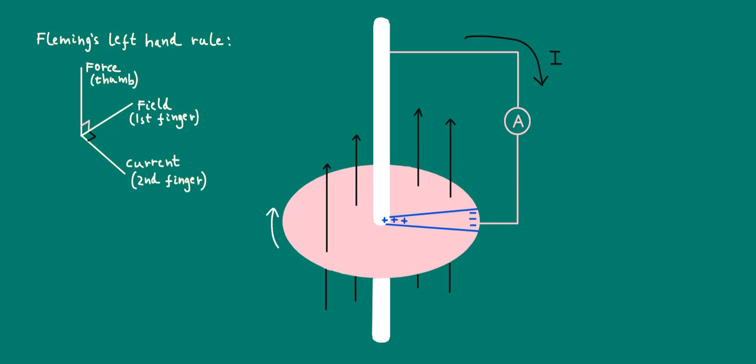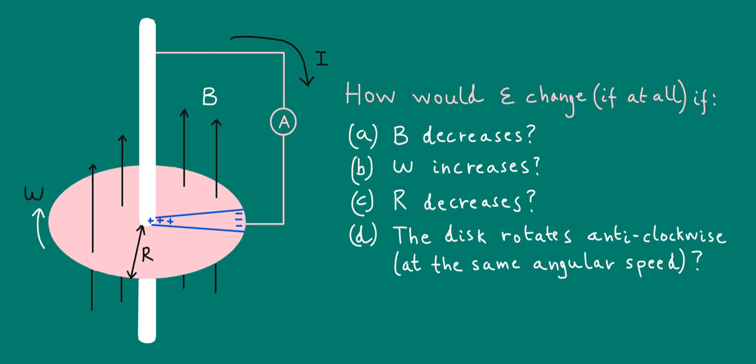Now, here's a couple of questions for you to ponder over. What, if anything, would change to the induced EMF if: (a) the magnetic flux density B were to decrease, (b) the angular speed omega were to increase, (c) the radius of the disk capital R were to decrease, and (d) the disk were to rotate anti-clockwise but at the same angular speed as originally. Please pause the video and have a think about these yourself. Remember to try and justify your answers. When you're done, unpause the video and we'll discuss the answers.